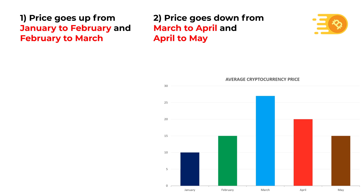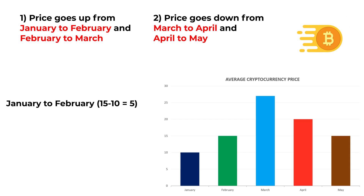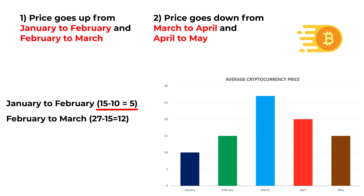Let's look at the two months with price increases closely. Between January and February, price went up from $10 to $15, so the difference is 15 minus 10, which equals 5. Between February and March, price went up from $15 to $27, so the price increase is 27 minus 15, which equals 12.